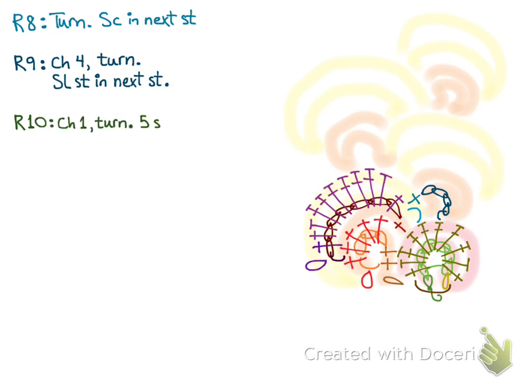For row ten, chain one and turn. Five single crochet over the chain. Then single crochet in the next stitch.